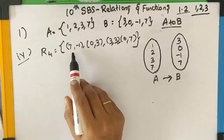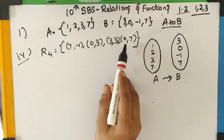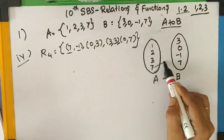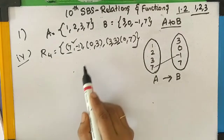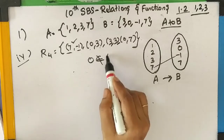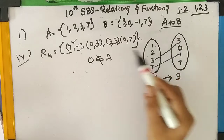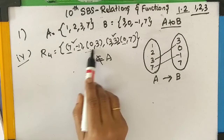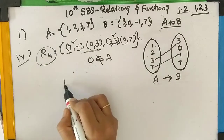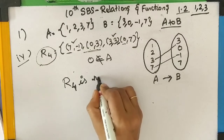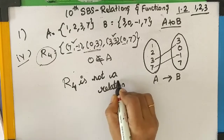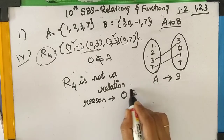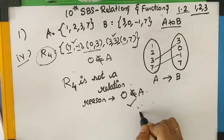R4 = {(7,-1), (0,3), (3,3), (0,7)}. The first elements 7, 0, 3, 0 should belong to A. (7,-1) is possible. But the second ordered pair (0,3): 0 is not an element of A. (3,3) is possible. But the fourth ordered pair (0,7): 0 is not an element of A. Even though two ordered pairs exist, the second and fourth do not. Therefore, R4 is not a relation from A to B — because 0 is not an element of A.